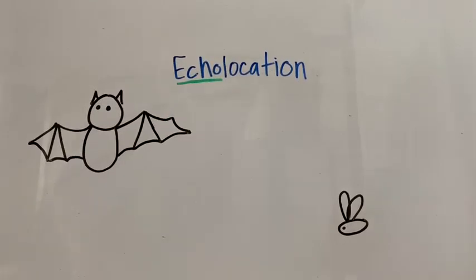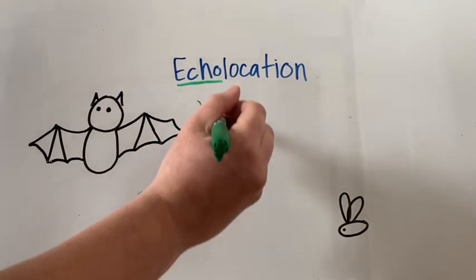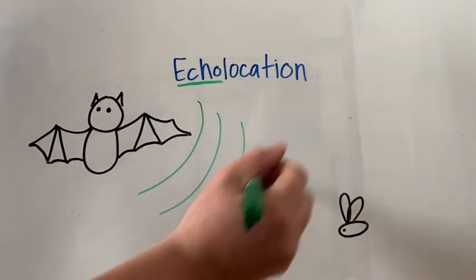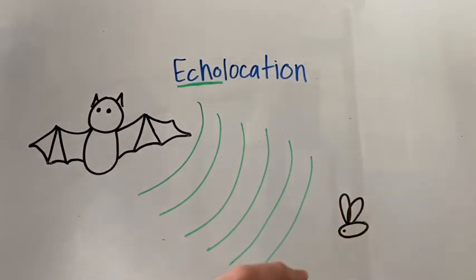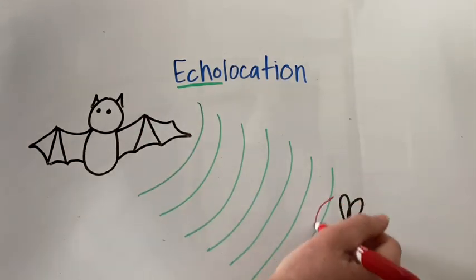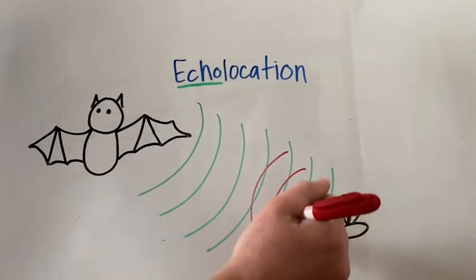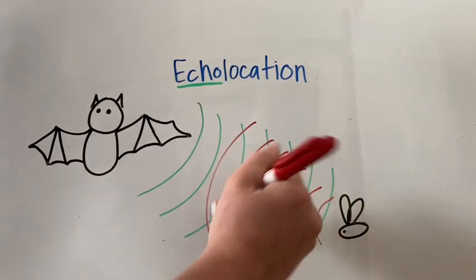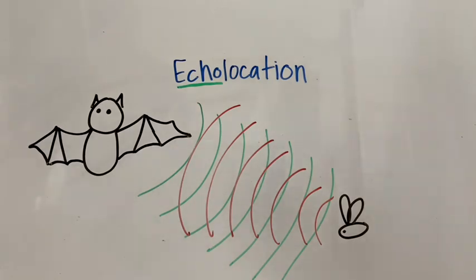Bats use high frequency sounds to locate prey. But what's even more amazing is that some of their prey have evolved strategies using these sounds to avoid being eaten. Over time, certain moth species have developed to not only hear bats' high frequency calls, but use their own calls to disguise their location or send signals that mean they taste bad. The evolutionary race continues.